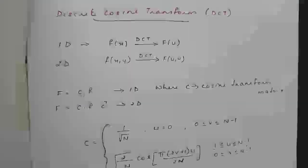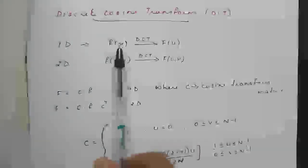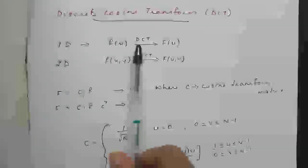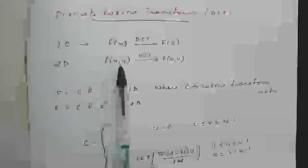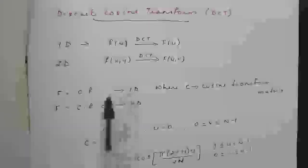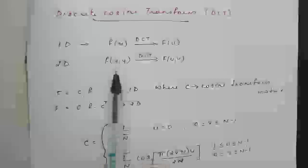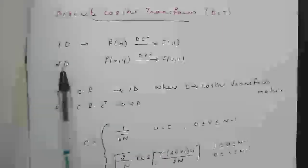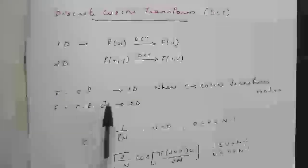We are going to see 2D and one-dimensional DCT. F of X is our one-dimensional input image. Its DCT is F of U. A two-dimensional signal is represented by F of X, Y, and its corresponding DCT is F of U, V. The one-dimensional function is F = C × F, where C is the cosine transform matrix multiplied by the input signal F(X). In the case of two dimensions, F = C × F × C-transpose.